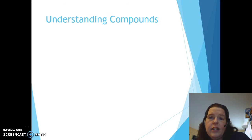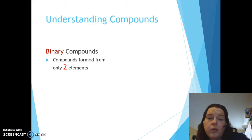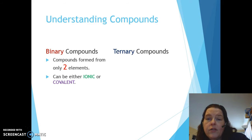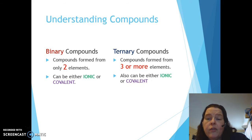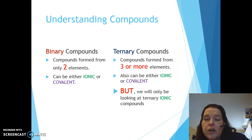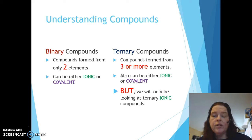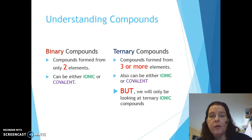Understanding compounds: we can have two kinds of compounds. Binary compounds are compounds formed from only two elements, and they can be either ionic or covalent. Ternary compounds are compounds formed from three or more elements, and also can be either ionic or covalent. The prefix 'bi' means two, and 'ternary' means three or more — that's just vocabulary we need to understand.